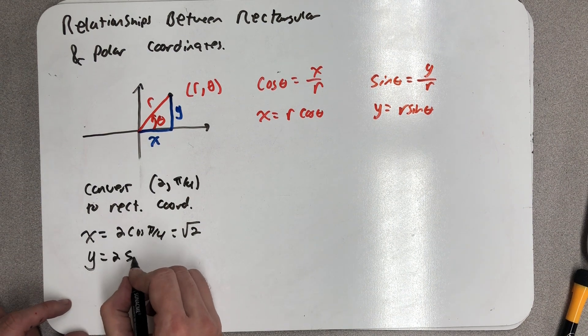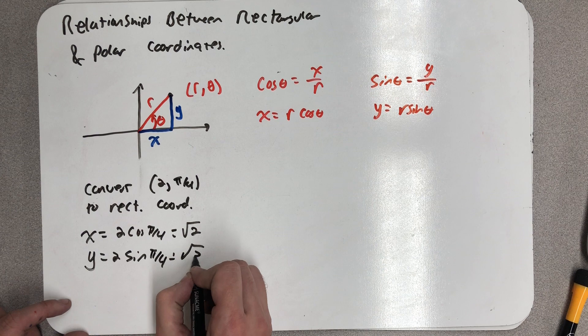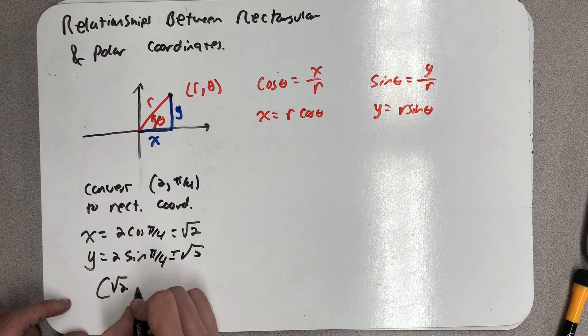y is equal to 2 times the sine of π/4, and I also get √2. So (√2, √2).